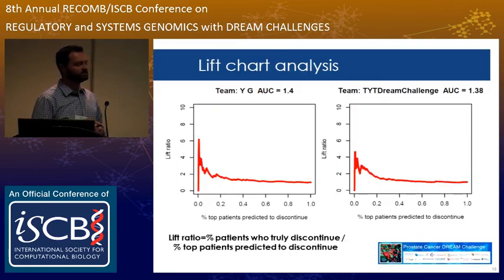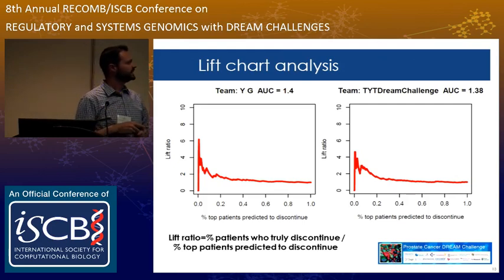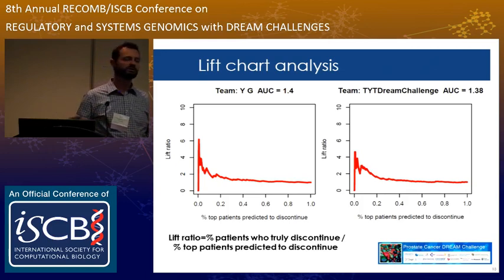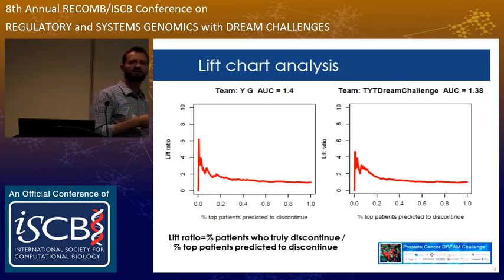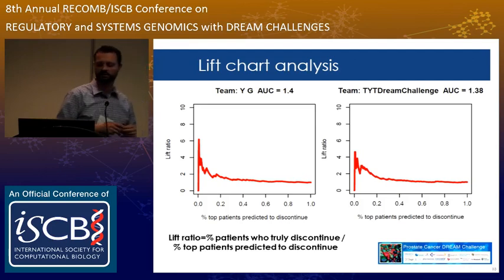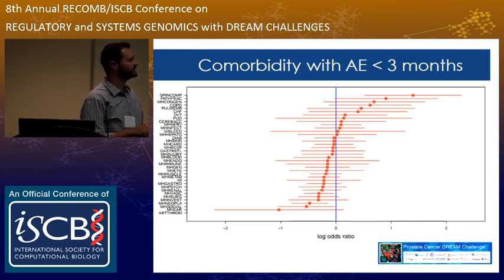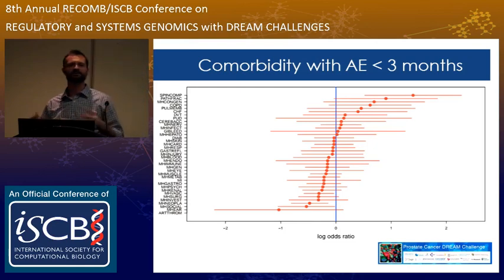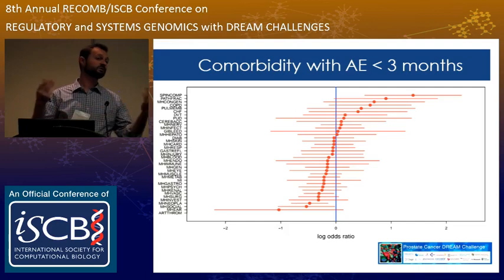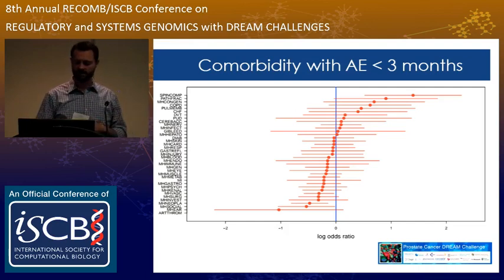We looked at lift chart analysis: if we predict the top 20% of patients to discontinue, those patients are highly enriched for actually being discontinued. You might not predict everyone who will discontinue, but within that top group the enrichment is useful. We also looked at comorbidities associated with adverse discontinuation within three months — we see things that make sense, such as patients with COPD and other comorbidities tending to be more associated with discontinuation.